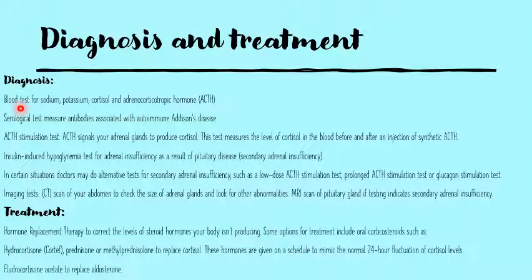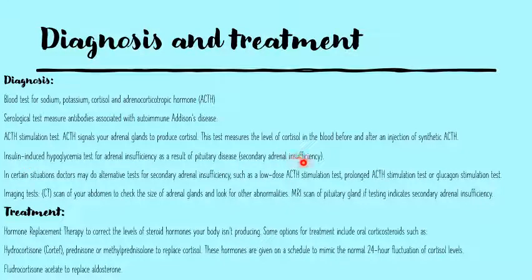Diagnosis can be as simple as a blood test checking for sodium, potassium, cortisol, and ACTH levels, or a serological test looking for antibodies against 21-alpha-hydroxylase. More complex tests include hormone stimulation tests like the ACTH stimulation test or the glucagon stimulation test. Insulin-induced hypoglycemia is another test used to diagnose secondary adrenal insufficiency, or we could perform imaging tests if we suspect an abnormality in the size of either the adrenals or the pituitary. Treatment is straightforward — hormone replacement therapy to correct the levels of the missing hormones.